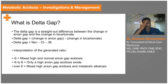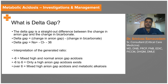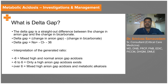We already discussed the anion gap, so let's look at what exactly is the delta gap. The delta gap is the difference between the change in the anion gap and the change in the bicarbonate. If the normal anion gap is 12 and the normal bicarbonate is 24, then: (measured anion gap − 12) minus (24 − measured bicarbonate) gives you the delta gap.